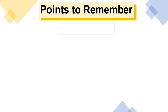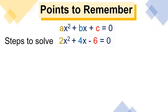Let's have an example to understand it better. This is our standard quadratic equation, which is ax squared plus bx plus c is equal to 0. Now let's solve 2x squared plus 4x minus 6 is equal to 0.